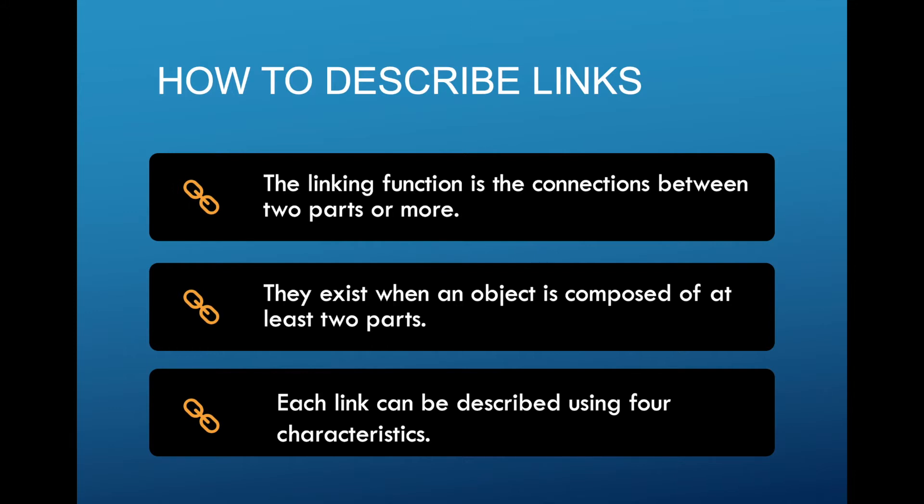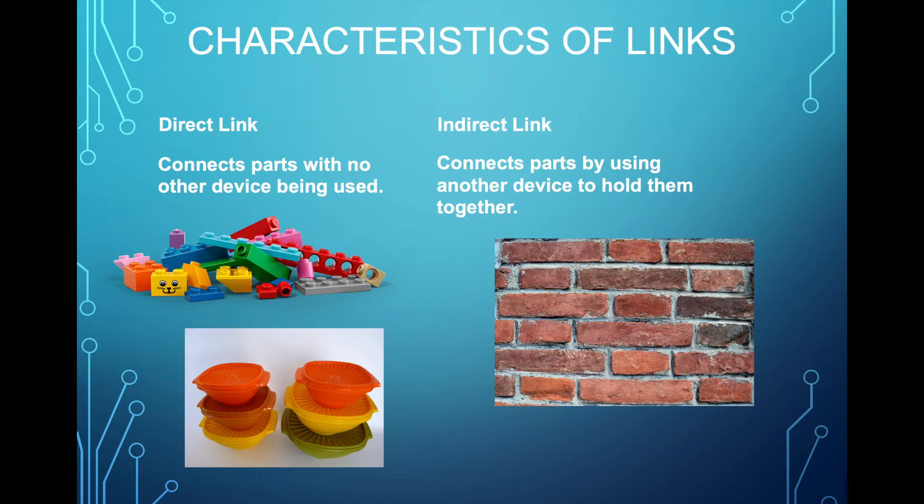So we're going to look at each characteristic one at a time. The first one, is it a direct link or an indirect link? In the case of a direct link, there's no substance or component that is linking the two parts together. If we think of a Tupperware, of a plastic container, the lid and the container itself are just holding together because of their design. So you're just putting pressure on the top to link it to the bottom part.